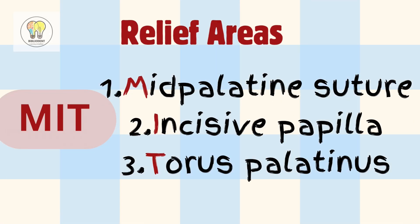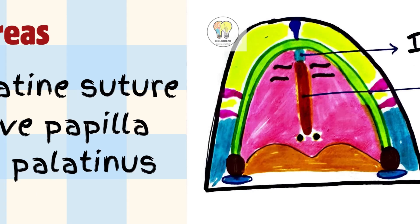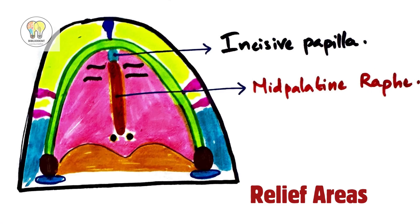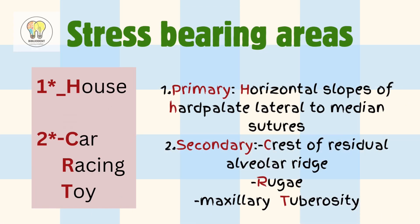Now coming to relief areas, the mnemonic is 'just symbol MIT': M for mid palatine suture, I for incisive papilla, and T for torus palatines. Here is the diagram showing relief areas, labeling incisive papilla and mid palatine raphe.